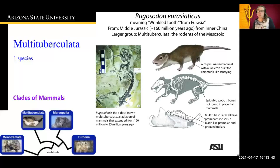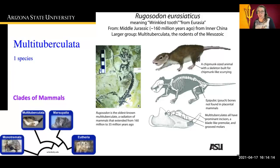The next clade is Multituberculata. There is only one species, and it is found in Asia. It is from the middle Jurassic period. It stems from an ancestor, and its name means 'wrinkled tooth.' It is a type of rodent. The oldest known fossil is from around 160 to 35 million years ago, and the one species we see today is an extant species from this organism's fossil record.